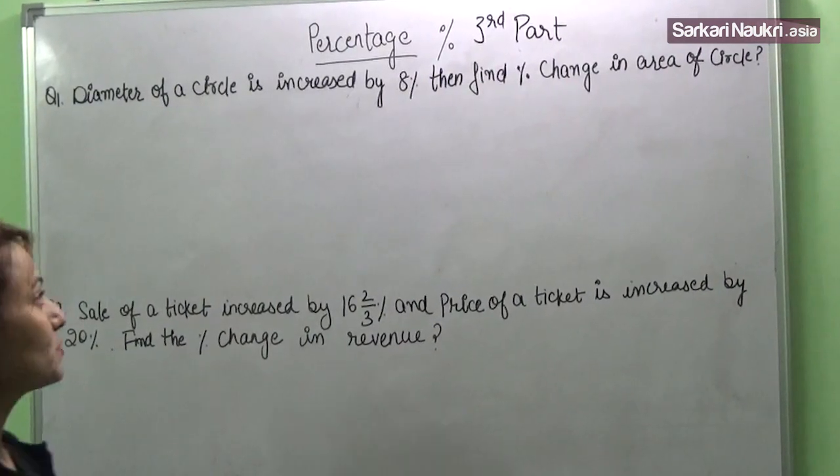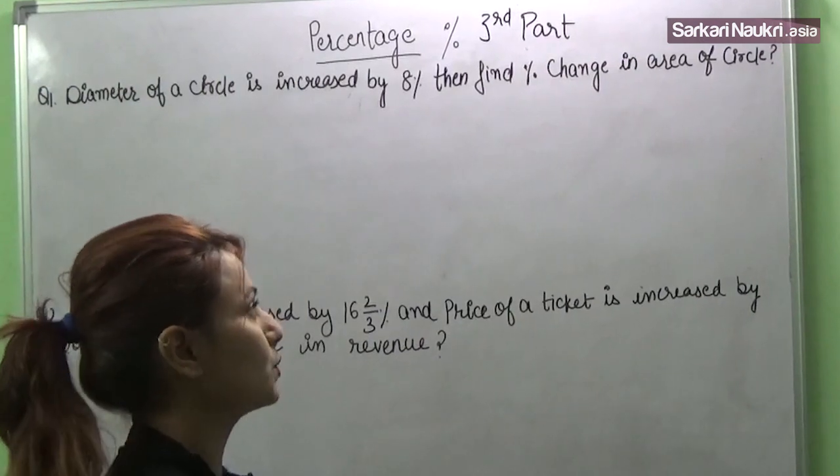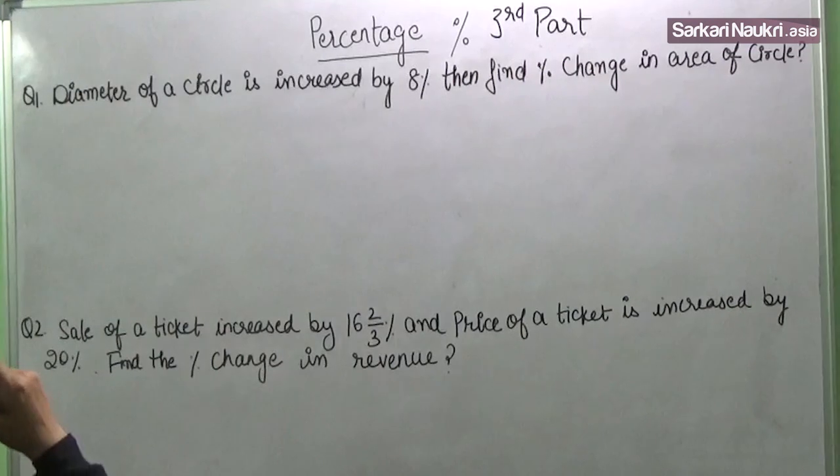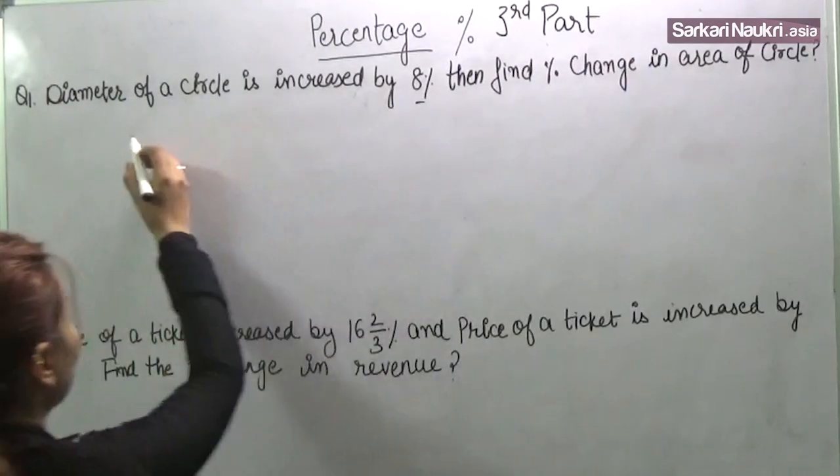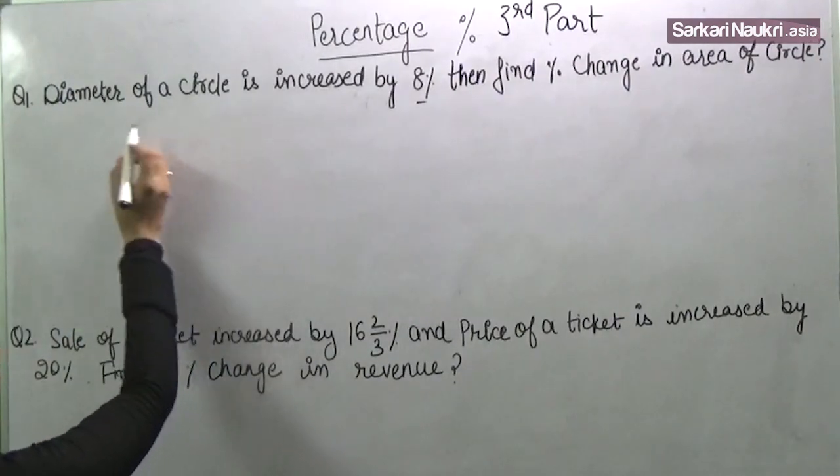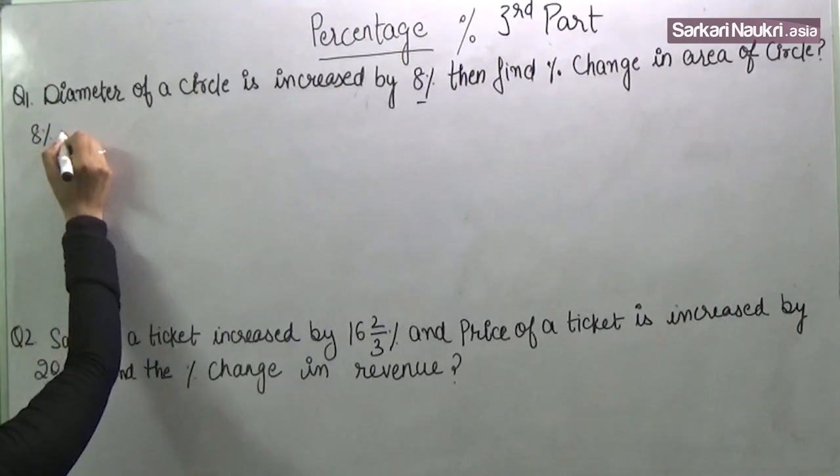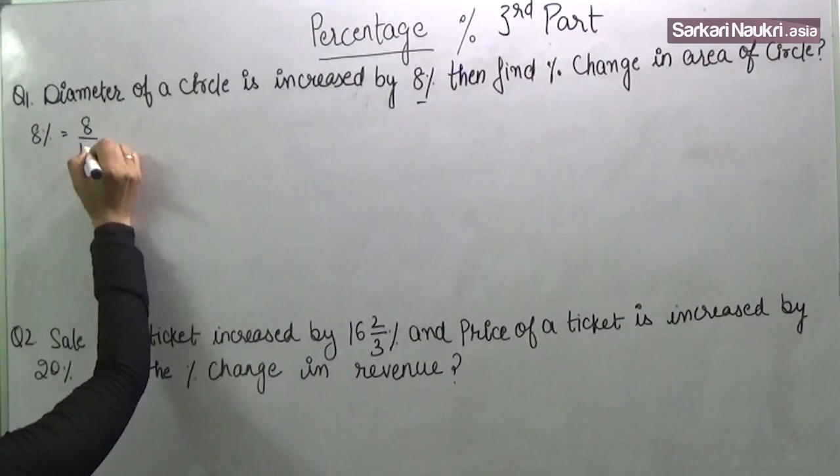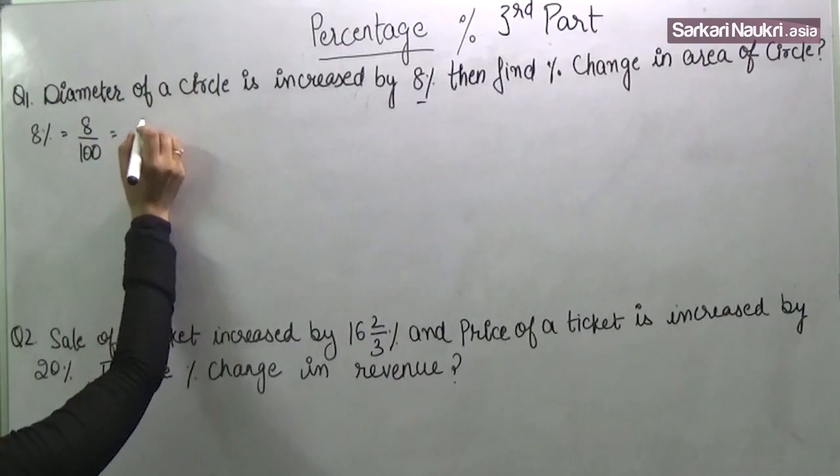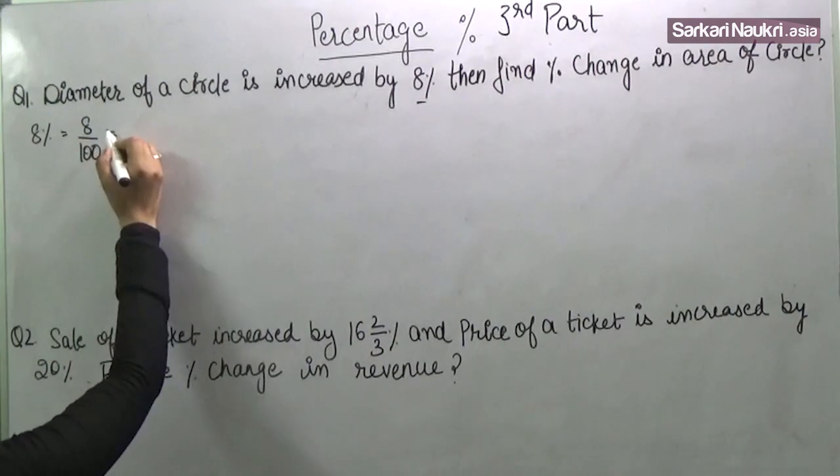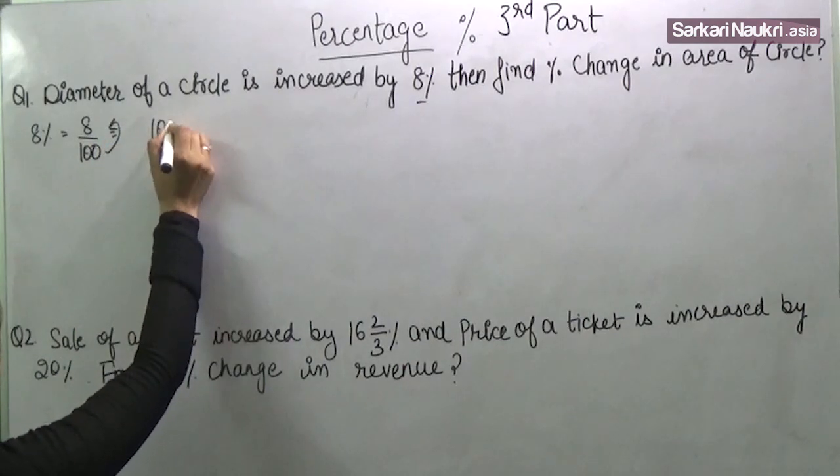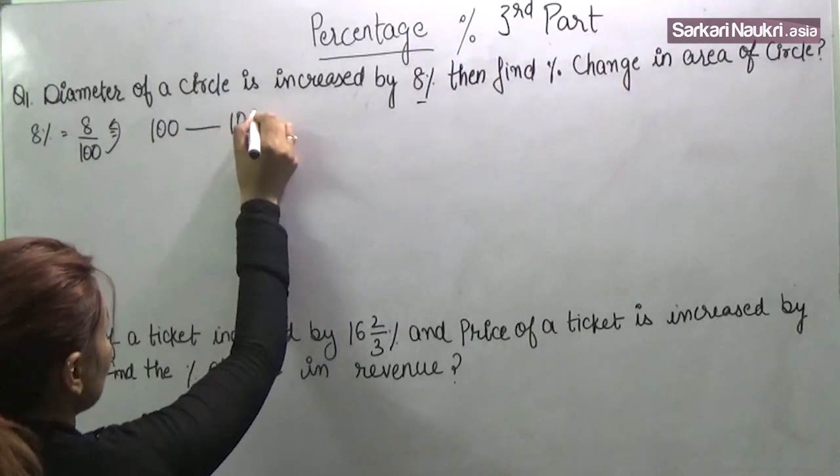Diameter of a circle is increased by 8%. Then find the percent change in the area of circle. So 8% is the diameter. That means 8 by 100, and it is increased. So this is 100, this is 108.